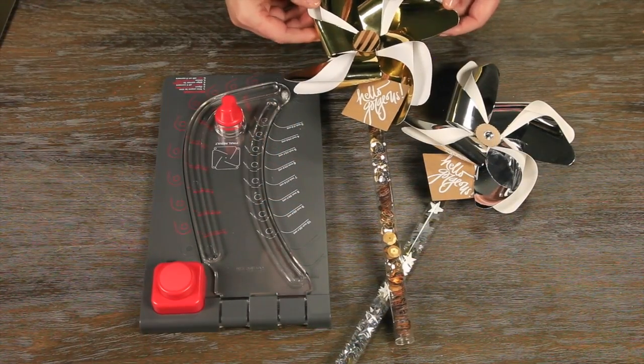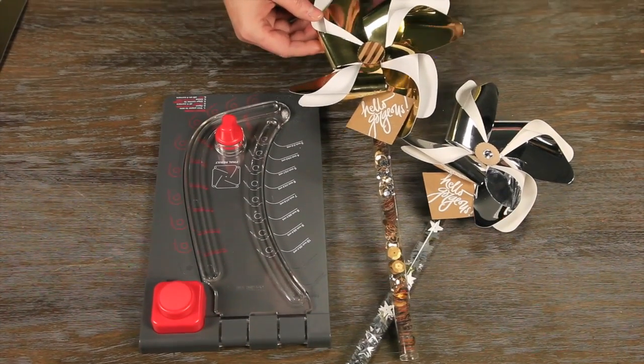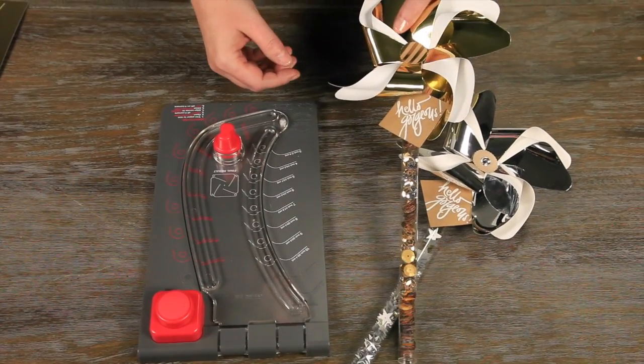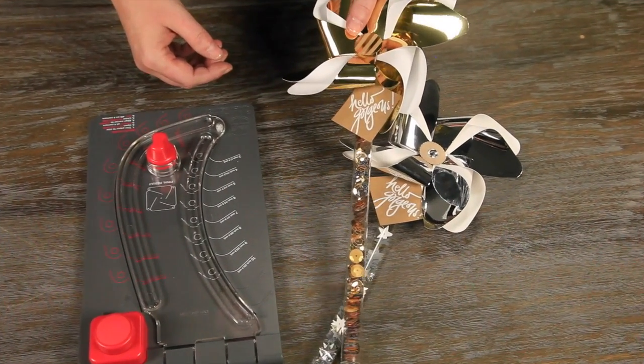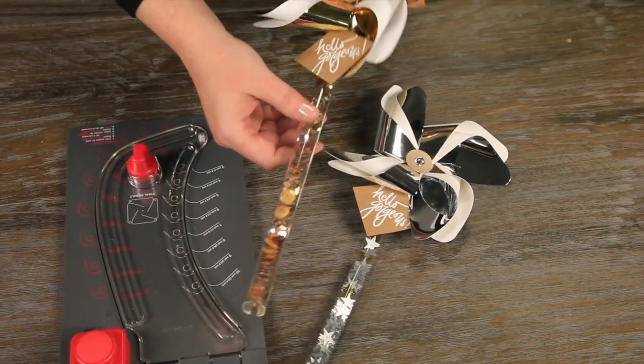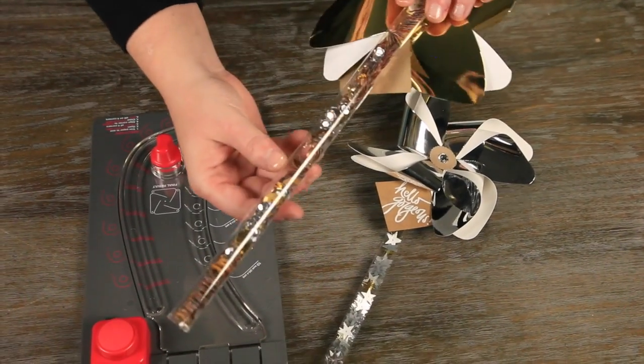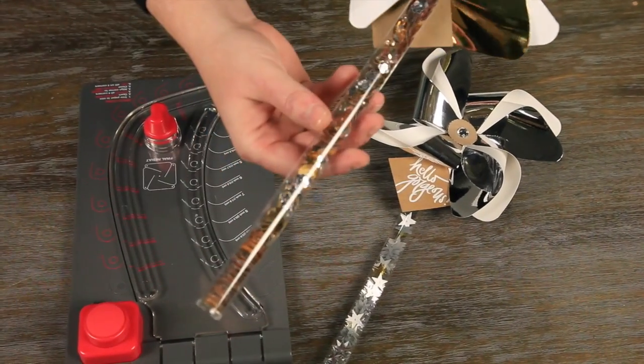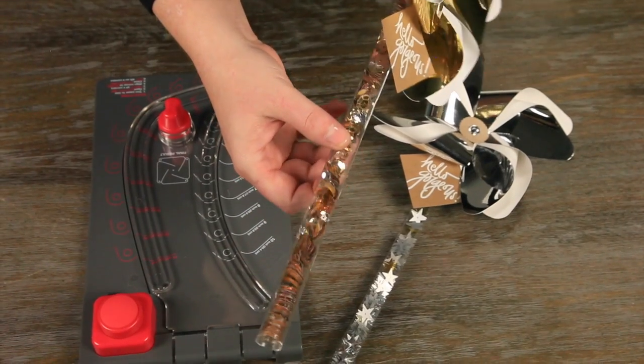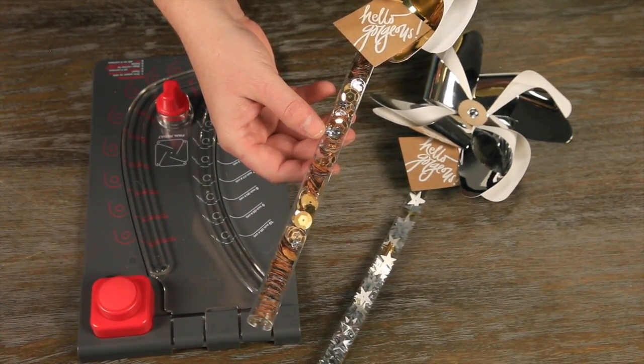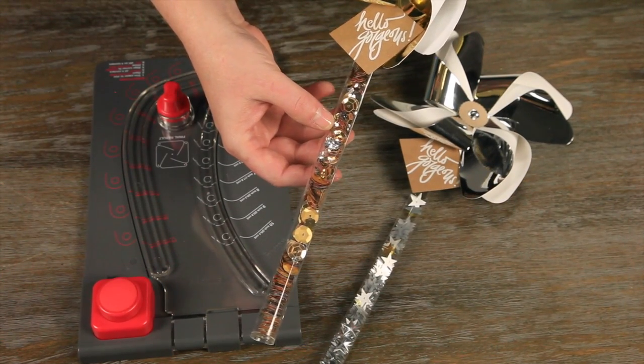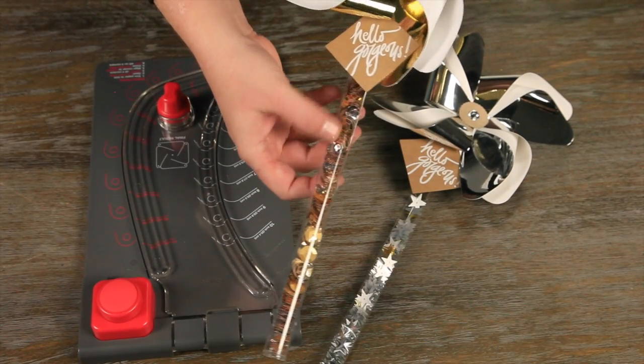Next, we're going to make these super cute wands. The great thing about these is that you can use these for any occasion. You can use them for wedding. You can use them for a birthday party. And what I love about it most is the super fun sequins that are inside the clear tube. So you can put sequins like I've done here, or you could even, for the holidays, put snow in there, rice for a wedding, whatever you want inside the wand.